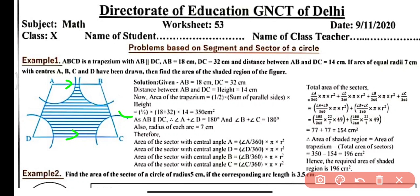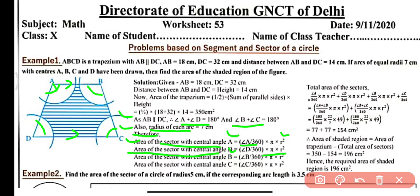Since AB and DC are parallel, angles A and D are co-interior angles, so angle A + angle D = 180°. Similarly, angle B + angle C = 180°. The radius of each arc is 7 cm. Area of sector with central angle A = (A/360) × πr², and area of sector with central angle D = (D/360) × πr².